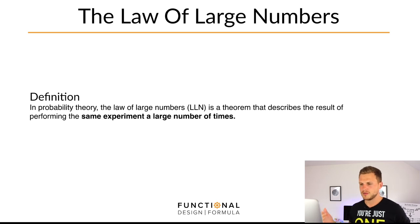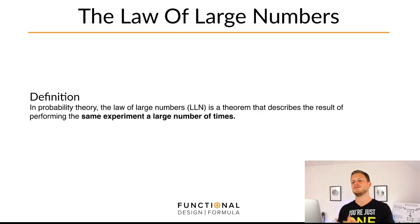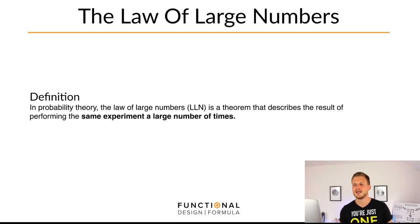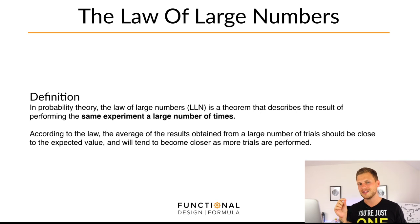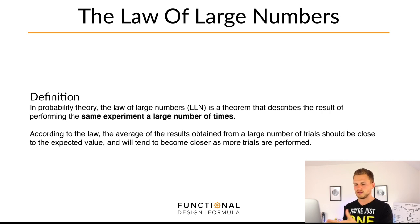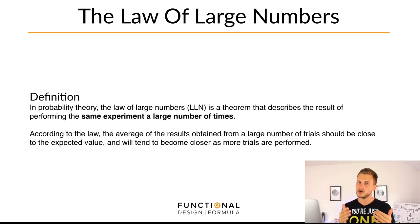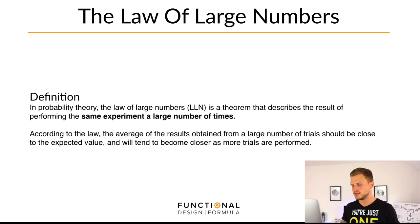So the law of large numbers — here is the definition. In probability theory, the law of large numbers (LLN) is a theorem that describes the result of performing the same experiment a large number of times. According to the law, the average of the results obtained from a large number of trials should be close to the expected value and will tend to become closer the more trials are performed. Basically: the more tests you do, the more accurate your prediction gets.